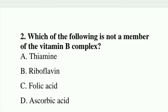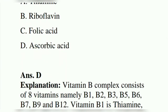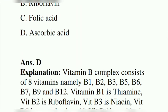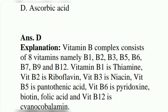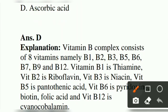Second question: which of the following is not a member of vitamin B complex? Option A: thiamine. Option B: riboflavin. Option C: folic acid. Option D: ascorbic acid. The answer is D, ascorbic acid. Explanation: vitamin B complex consists of eight vitamins, namely B1, B2, B3, B5, B6, B7, B9, and B12.